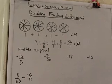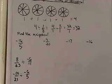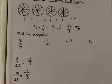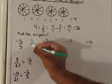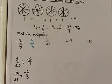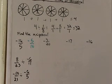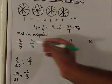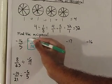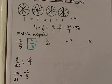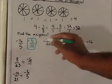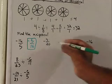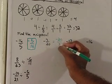So now let's just practice getting the reciprocal. What is the reciprocal of negative 16 over 5? All you do is what's in the denominator goes in the numerator, what's in the numerator goes in the denominator, and keep your minus sign either at the top or off to the side. So the reciprocal of negative 16 over 5 is negative 5 over 16. What's the reciprocal of negative 3 over 20? That's negative 20 over 3.